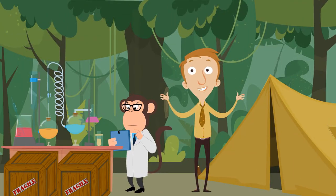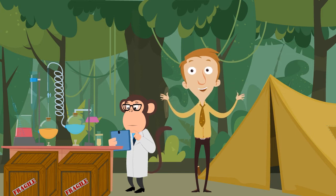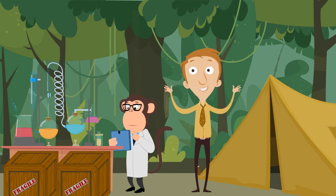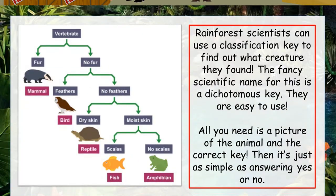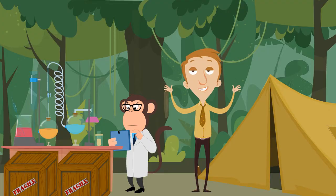Once they've gathered the information they need — whether it's pictures, video recordings, or maybe just a drawing of the new animal — the scientists go back to camp and try to identify what animal species they actually saw. Rainforest scientists can use a classification key to find out what creature they found. The fancy scientific name for this is a dichotomous key. They are much easier to use than they are to say though. All you need is a picture of the animal and the correct key, then it's just as simple as answering yes or no to a series of questions.